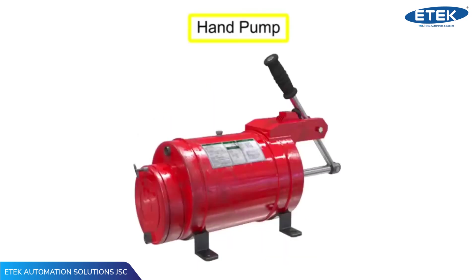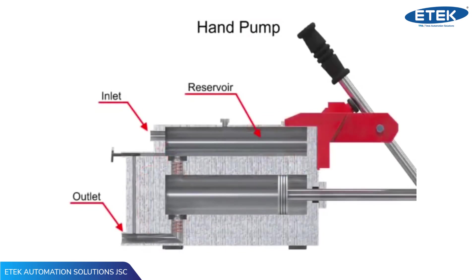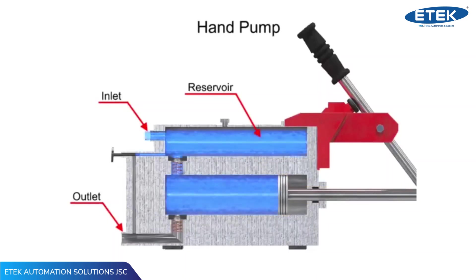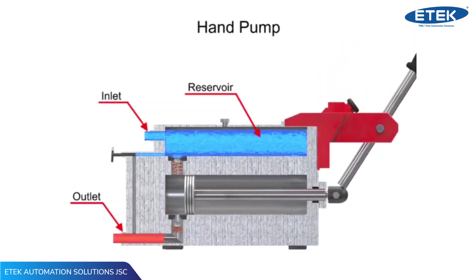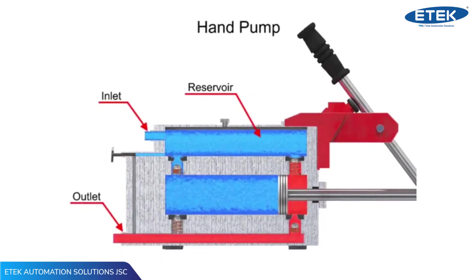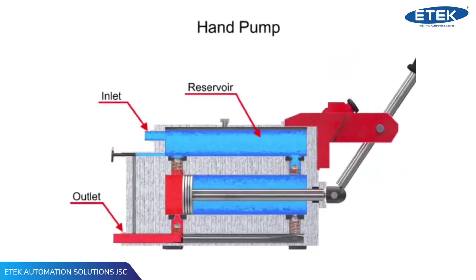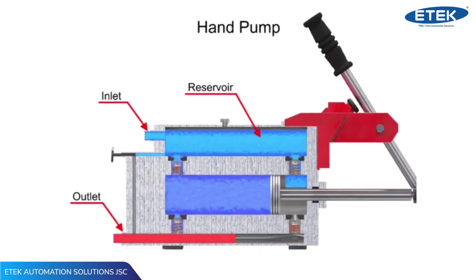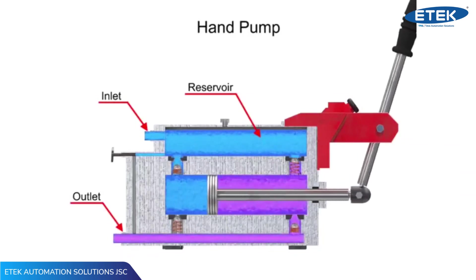Hand pumps are used when a source of power is not available or where the extra expense of a power pump isn't warranted. For example, they are used on shop presses and other portable equipment, serve as standby pumps, and serve as sources of emergency power. Hand pumps are always of piston type and are usually constructed with a piston working between two check valves. Double acting hand pumps are more efficient, allowing fluid to both enter and discharge on both strokes of the piston. Moving the pump handle in either direction allows fluid to be drawn in from the reservoir and discharged via the outlet ports.